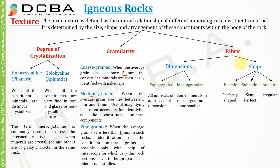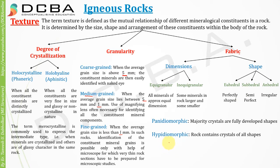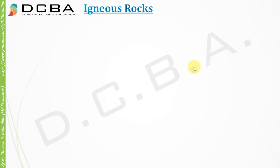Based on these, fabric is classified into three types. First is panidiomorphic, where the majority of crystals are fully developed shapes — either all euhedral, all subhedral, or all anhedral. Second is hyperiomorphic, where the rock contains crystals of all shapes. Third is allotriomorphic, where most crystals are anhedral, that is irregular. Perfectly shaped means symmetry and perfect angles; semi-perfect means symmetry but angles may not be perfect.